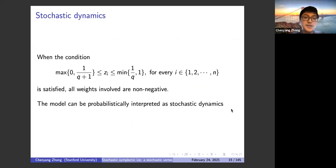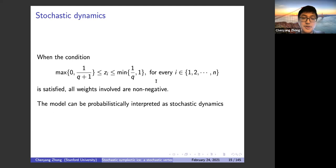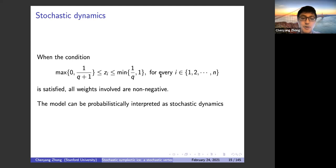To define a valid probability measure, we need the weights to be non-negative. This condition can be satisfied by taking z_i between certain bounds. With an appropriate choice of q, these values of z_i can be chosen, so the model does define a valid probability model.